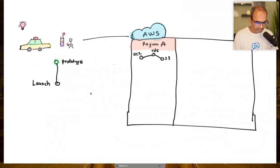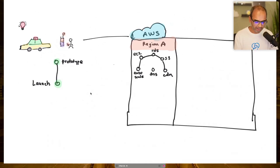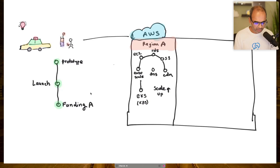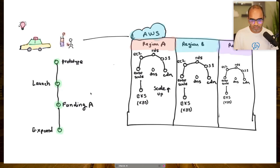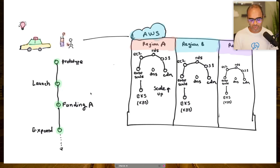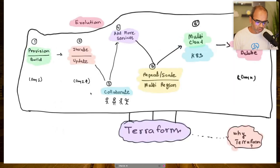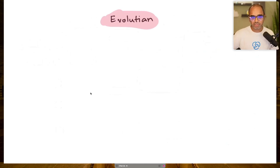But once your prototype is successful, you need to scale up and launch to production. You start incorporating more cloud components — compute, databases, autoscaler, DNS, CDN, S3 storage, and so on. You get funded, start growing, provision infrastructure in different regions to cater to different geographies, and maybe adopt hybrid cloud platforms. As this infrastructure evolves, you need a tool to manage its full lifecycle.